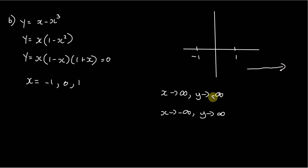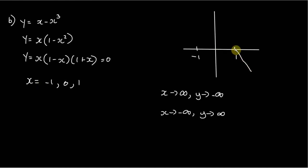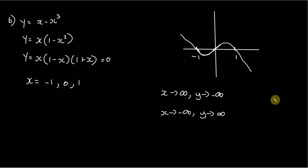As x tends toward positive infinity, y is negative, so we know the curve is coming up from the fourth quadrant. There's a solution at 1, and the curve loops back down and crosses at the origin, then loops back up and crosses at negative 1. That's the curve for y equals x minus x cubed.